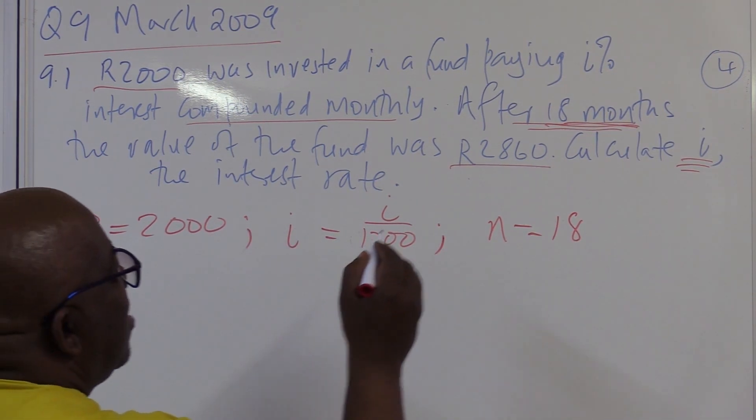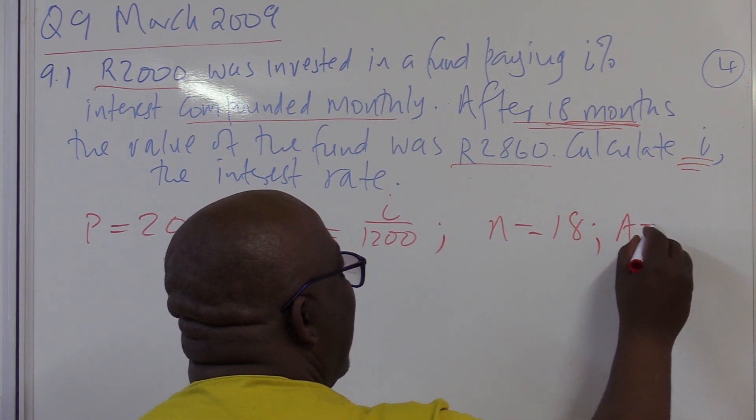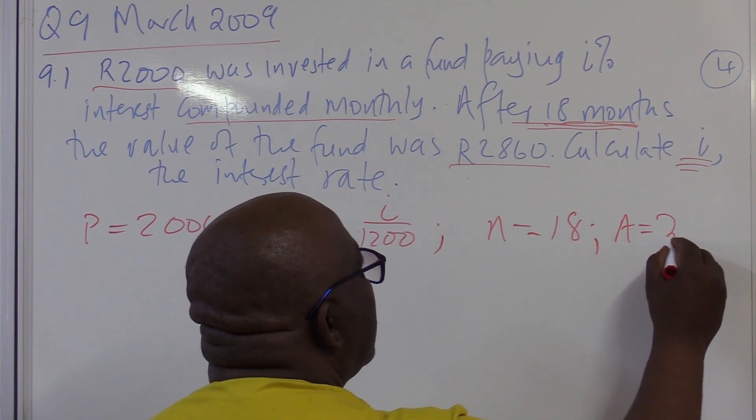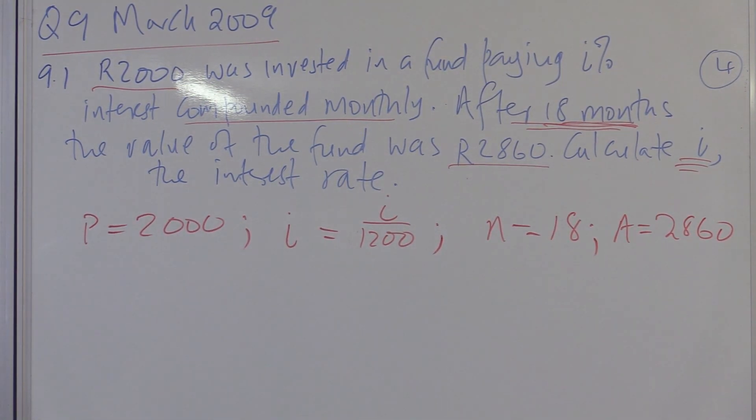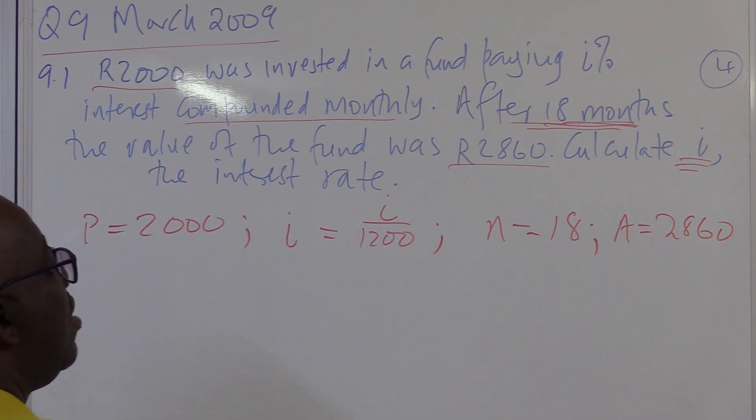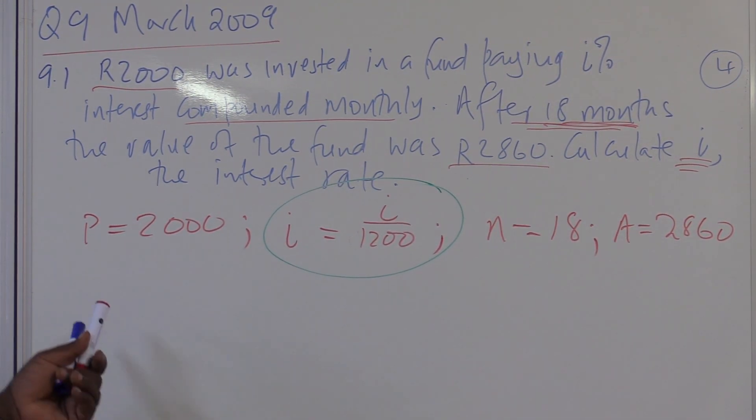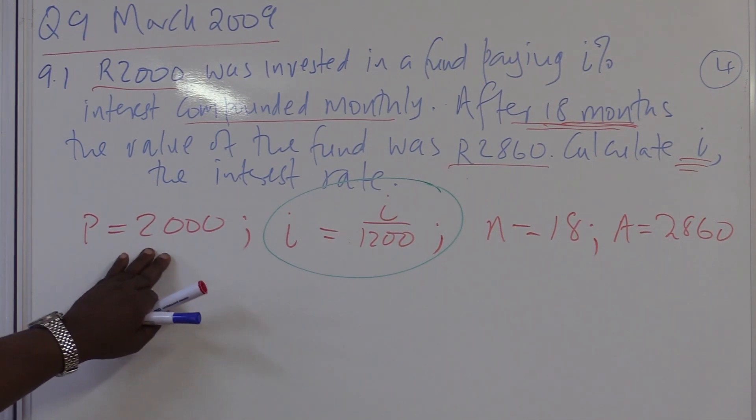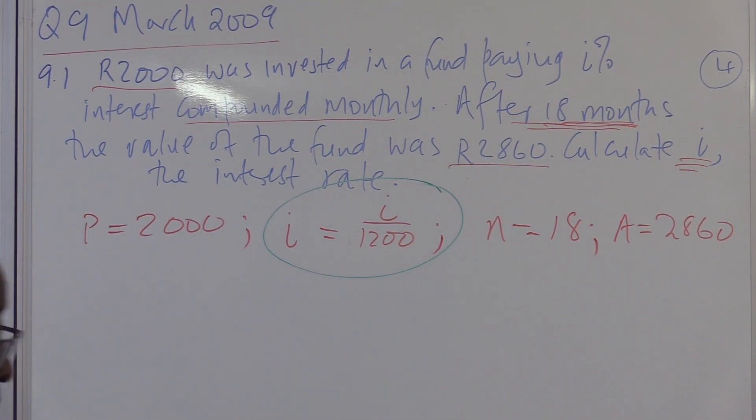The value of the fund was 2860, it is my A. That's what I get at the end of the investment period. Calculate I, we know that this is what we're looking for. Is this compound increase or compound decrease? I invested 2000, I'm getting 2860, so it is compound interest. So I go and write my formula.